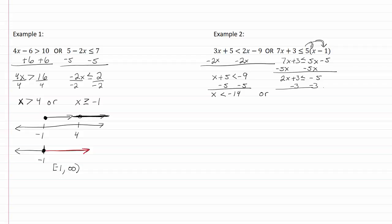Subtract three from both sides. I now have 2x is less than or equal to negative eight. Divide by two and we get x is less than or equal to negative four.